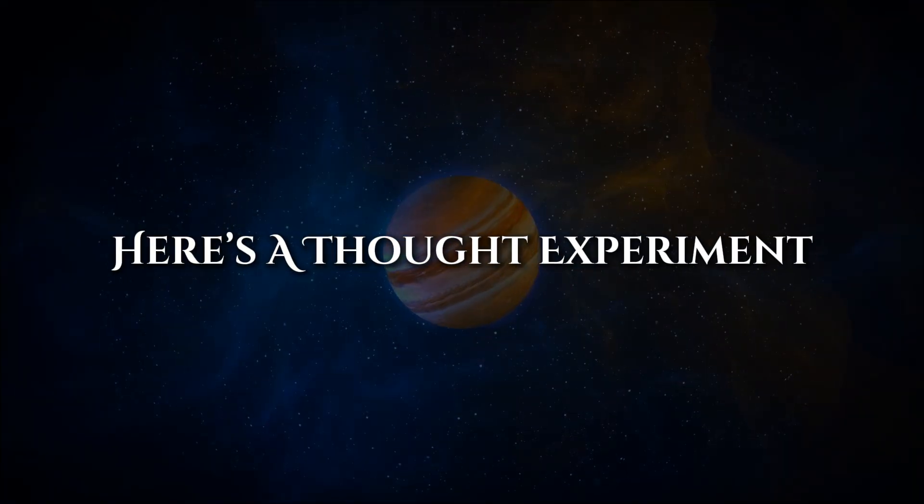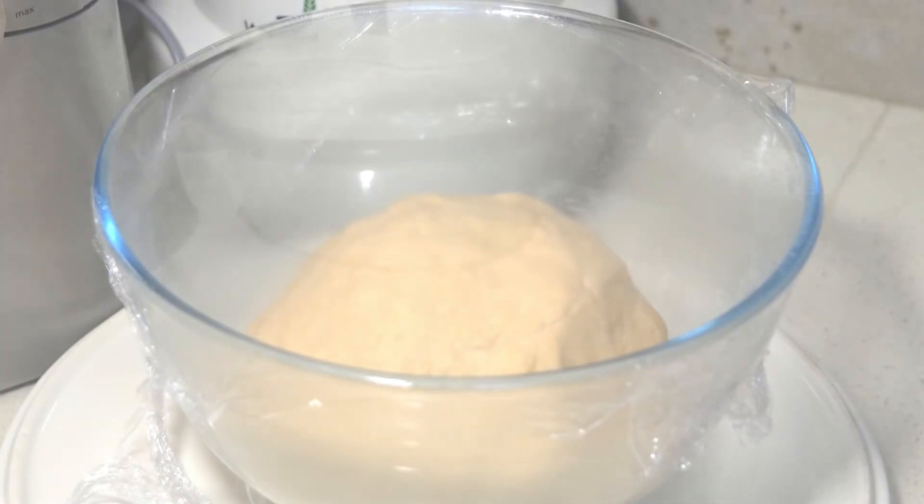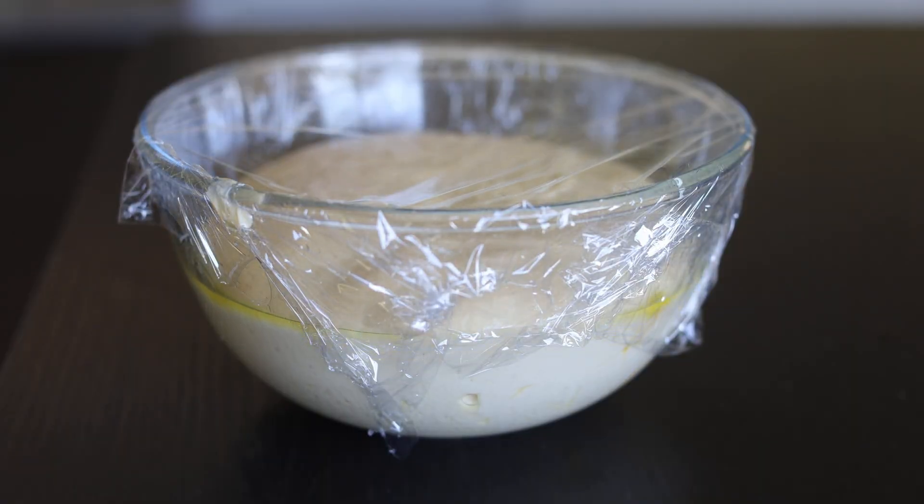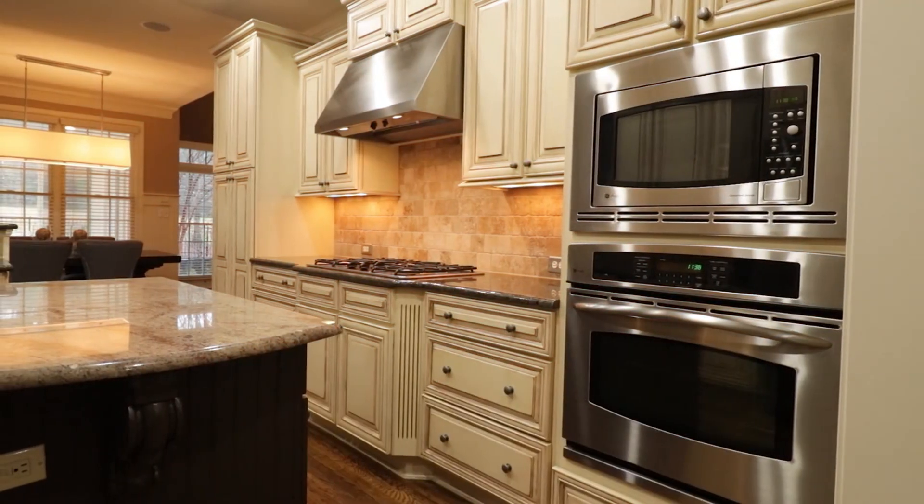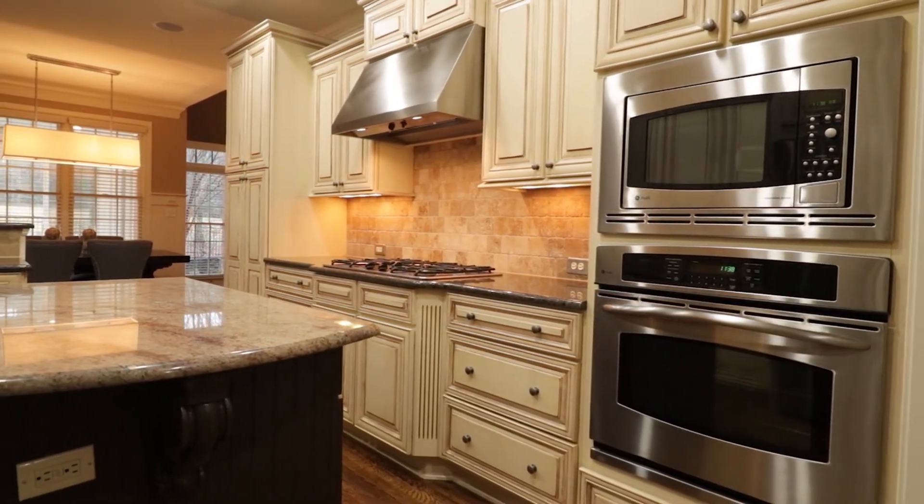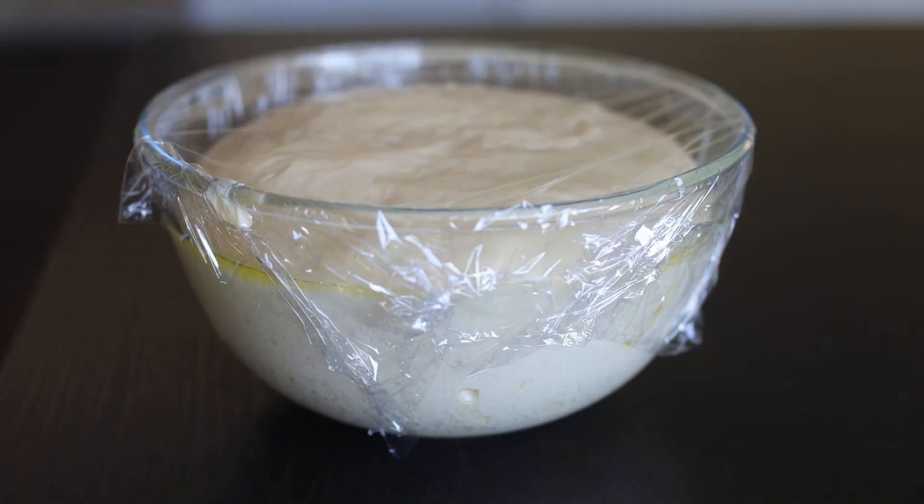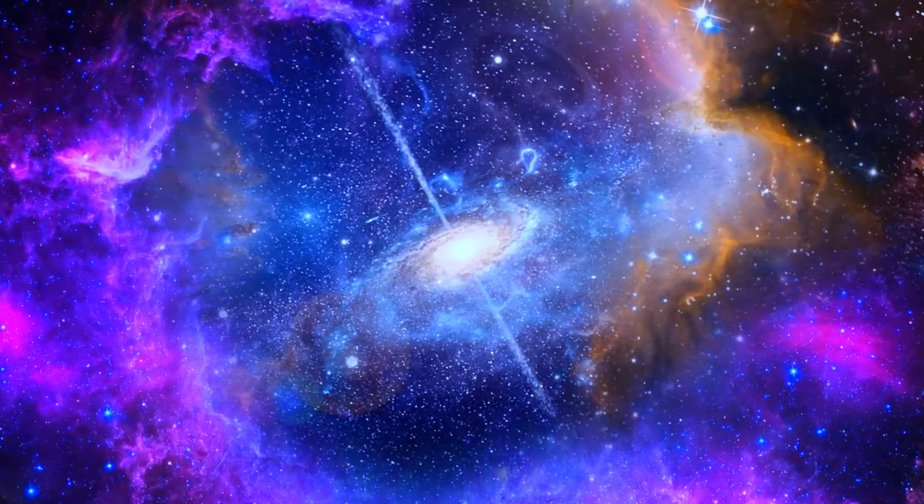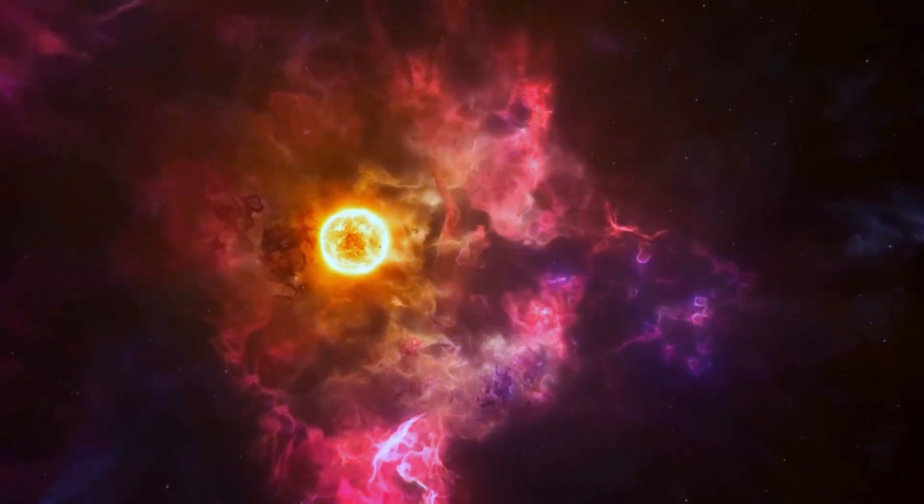Here's a thought experiment. Imagine a loaf of raisin bread in the oven. As the dough rises, each raisin moves away from all the others. From the perspective of any one raisin, it looks like everything else is racing away. But really, it's the dough between them that's expanding. No raisins are heading into the kitchen. They're just being separated by expanding bread. Now, replace raisins with galaxies and dough with the fabric of cosmos. That's the universe.